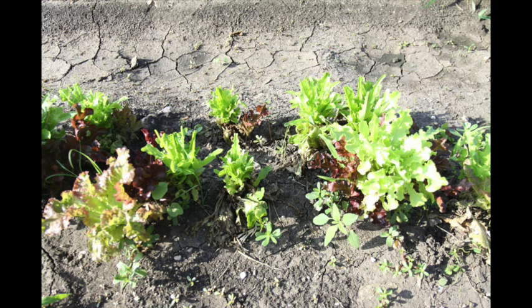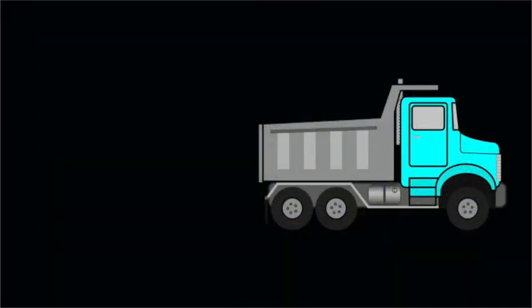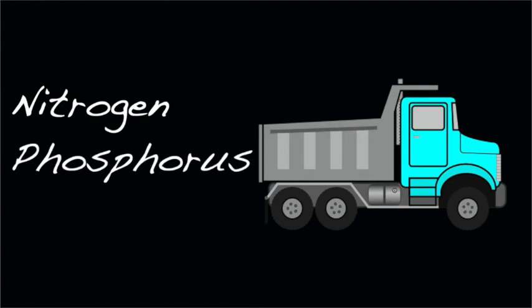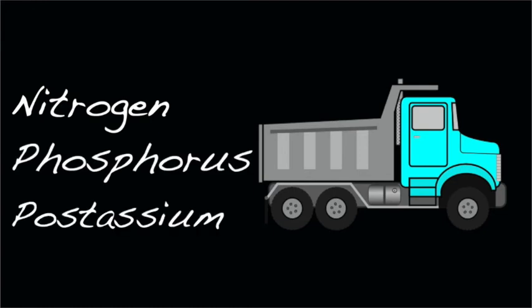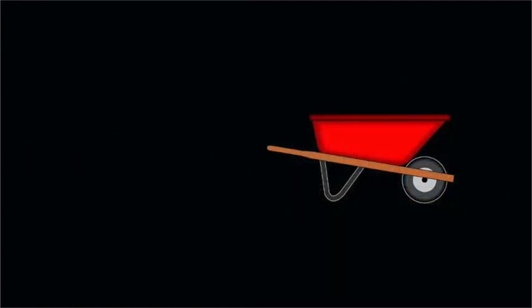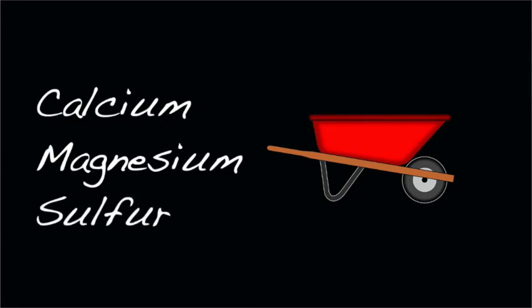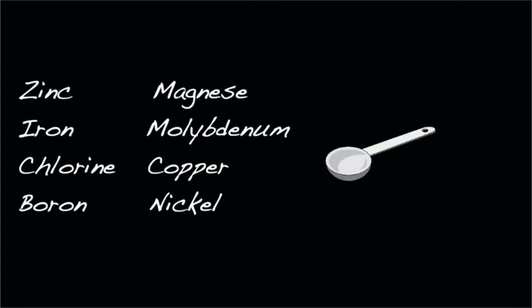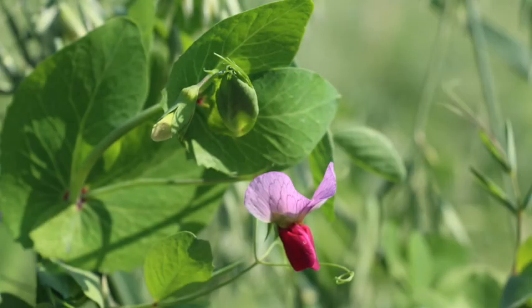Plants don't need all the nutrients in the same amounts. Relatively speaking, plants need the primary macronutrients — nitrogen, phosphorus, and potassium — by the dump truck load. The secondary macronutrients — calcium, magnesium, and sulfur — are needed by the wheelbarrow load. Finally, there are a number of micronutrients which are needed in very small amounts, teaspoons rather than the truck and wheelbarrow amounts of the macronutrients. Regardless of the amount needed, each of these nutrients is required for proper plant growth and metabolic processes.